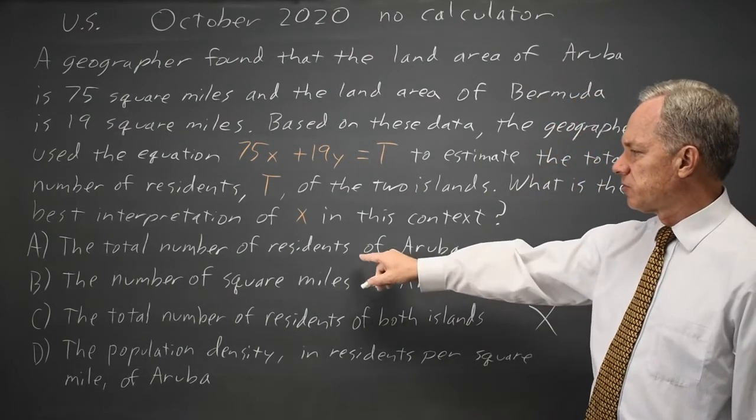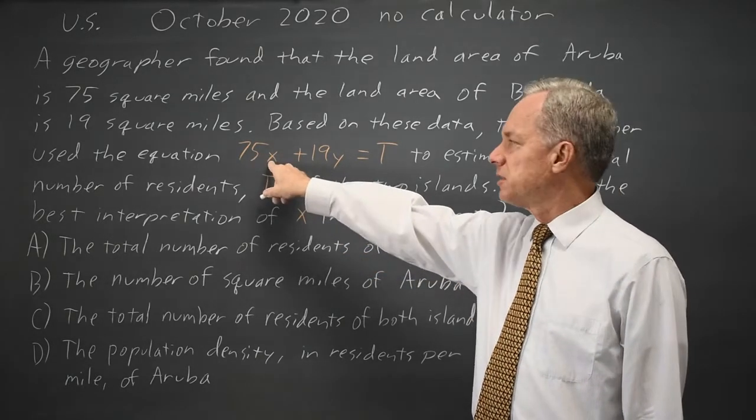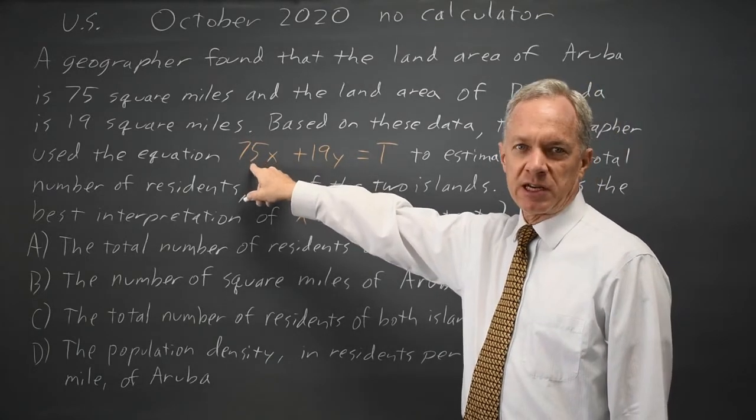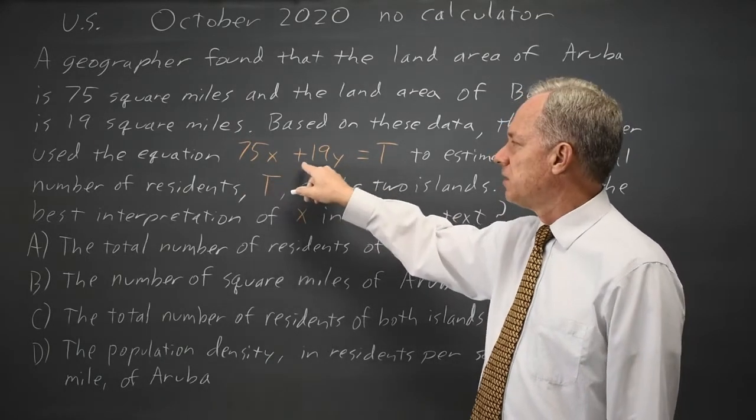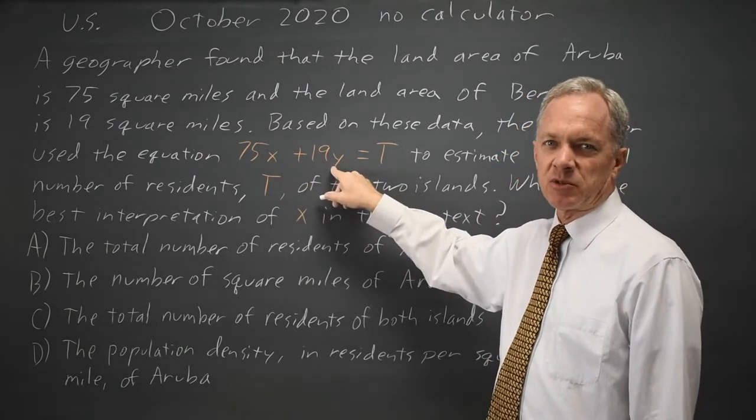Choice A: number of residents of Aruba. If you take 75 times the number of residents of Aruba, that's the total land area times the number of residents. And then the total land area of Bermuda presumably times the number of residents of Bermuda,